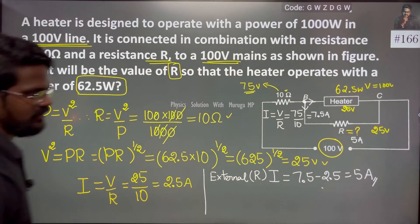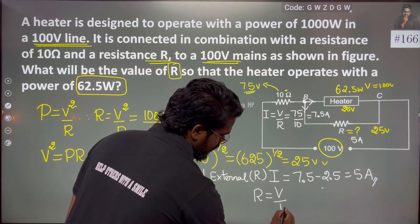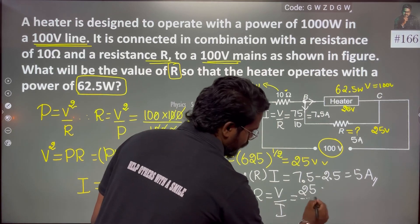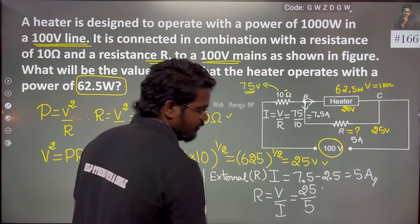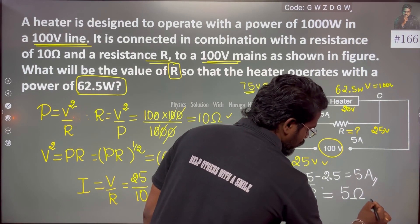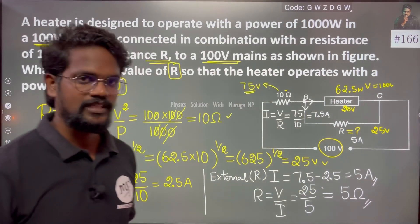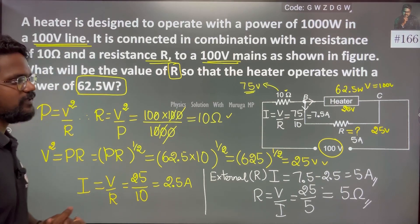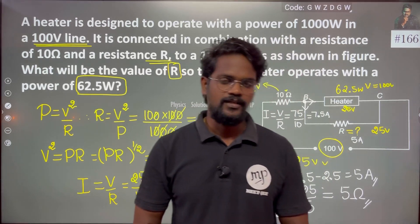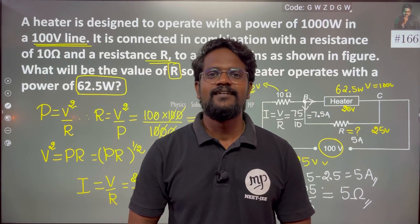Resistance R equals V by I. Potential is 25 V, current is 5 A, so resistance equals 25 by 5, which is 5 Ohm. So the external resistance is 5 Ohm. If you have any doubts, just look again — it's very easy. Thank you, and help others with a smile.